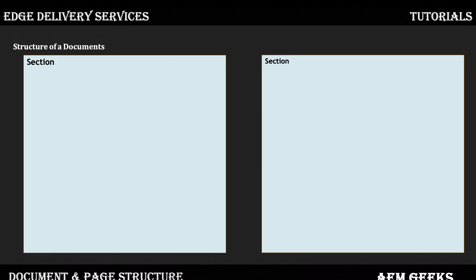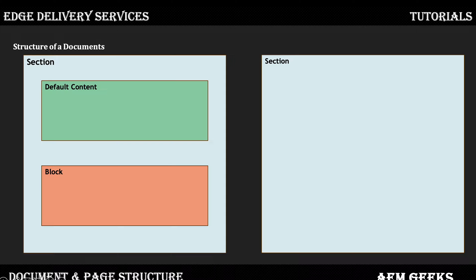Each section can have two types of content: default content and blocks. Default content is normal HTML elements — whatever HTML elements you can place on a page or in the document. For example, headings h1, h2, paragraph, list — those kinds of elements are called default content. A block is a specific piece of code; you can compare it with an AEM component.